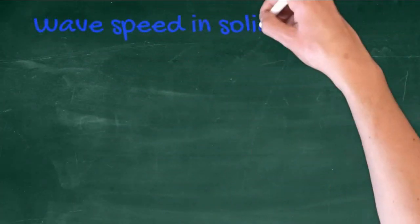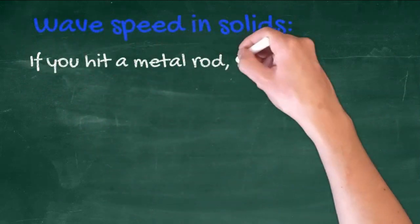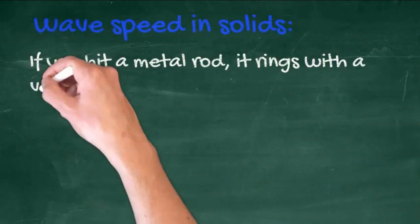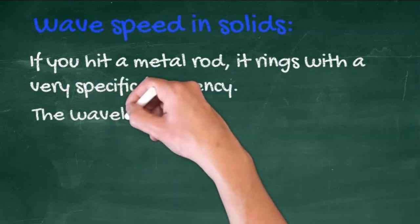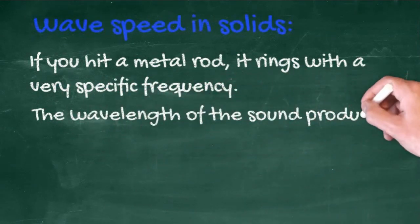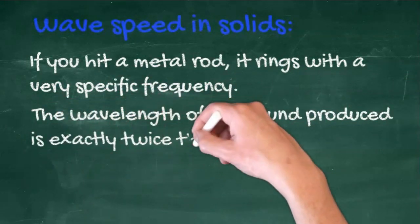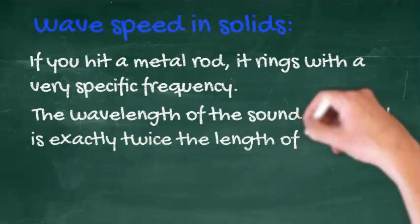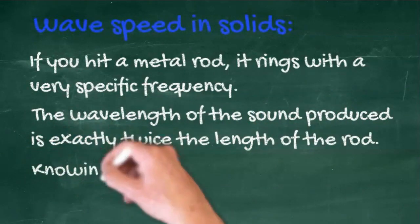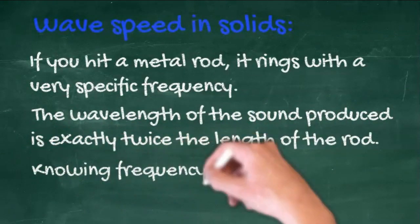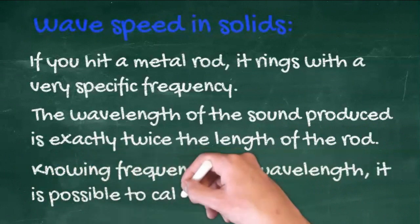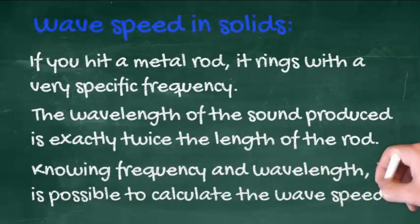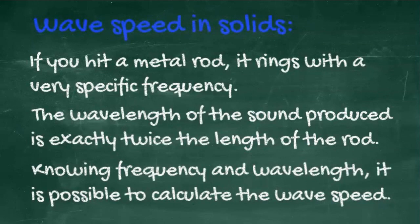It is also possible to use the wave equation to measure the speed of sound in a solid. If you hit a metal rod, it will ring with a very specific frequency. The wavelength of the sound produced is exactly twice the length of the rod. So knowing the frequency and the wavelength, you can use the wave equation to calculate the wave speed.